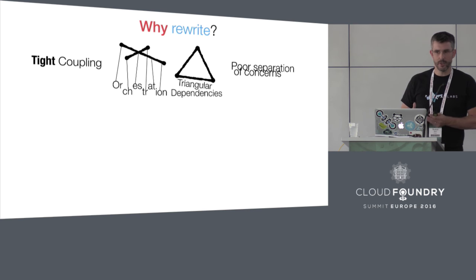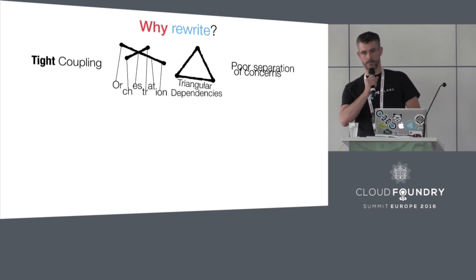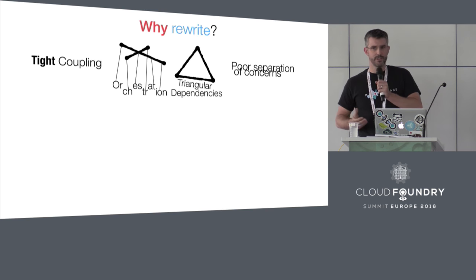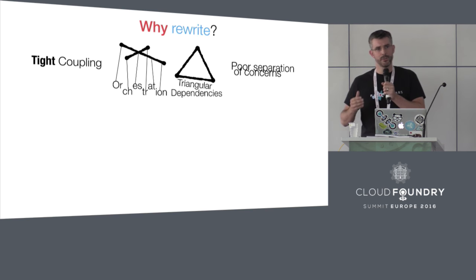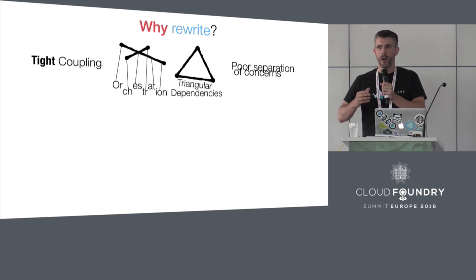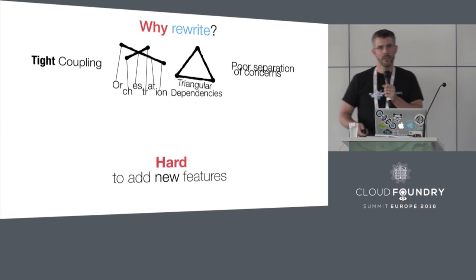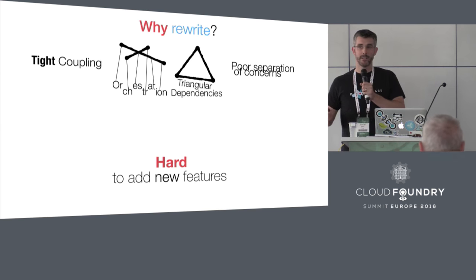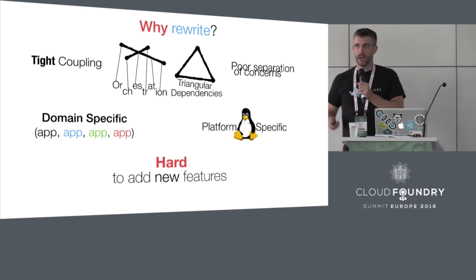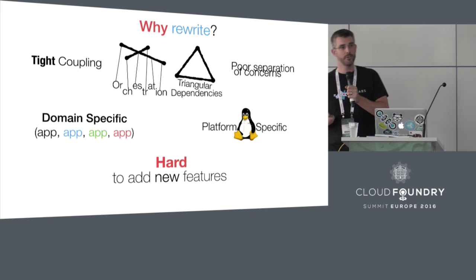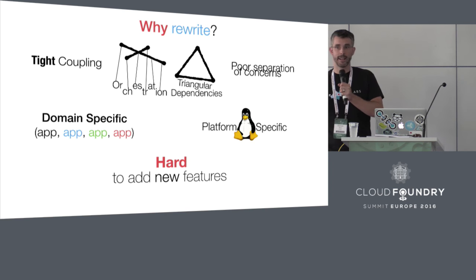He also talked about triangular dependencies and poor separation of concerns between some of the components. This led to a real challenge — Cloud Foundry was hard to reason over, hard to test, and hard to manage existing features. But more importantly at the time, it was hard to add new features. Back in 2014, Cloud Foundry was just about the app; it only supported one type of workload and had Linux-specific code hardwired throughout.